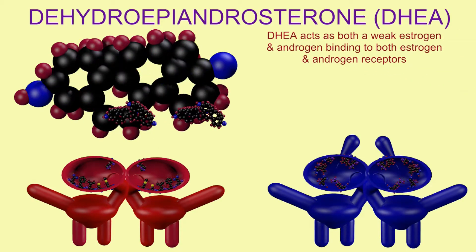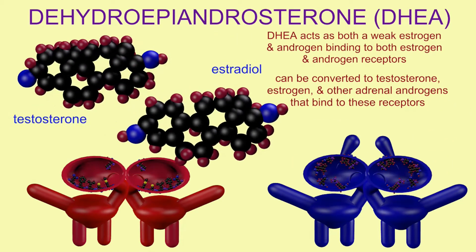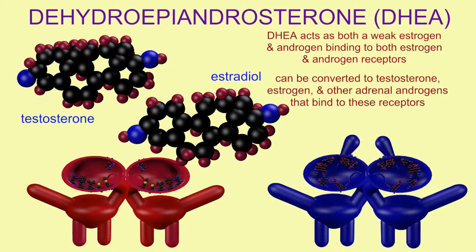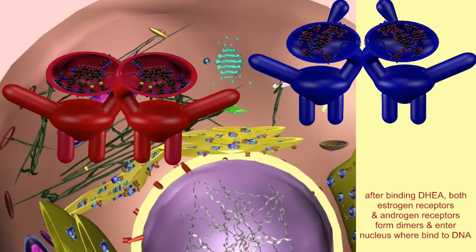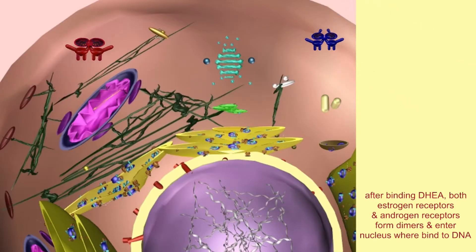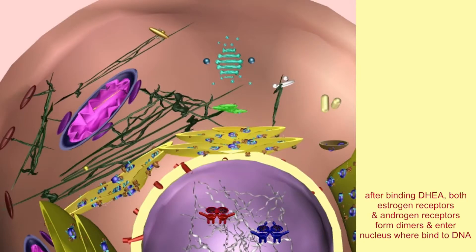DHEA acts as both a weak estrogen and a weak androgen in that it can directly bind to estrogen receptors and androgen receptors. However, DHEA can also be taken up by cells and then converted into testosterone or estradiol, which obviously very strongly bind to androgen and estrogen receptors.